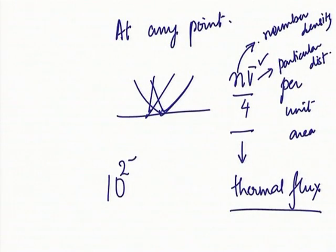Once you know the thermal flux and the average velocity, you can get the pressure: based on the average velocity you know the change in momentum, and you know how many collisions are occurring per unit time. Knowing the change in momentum per unit time gives the force, and force per unit area is the pressure. At atmospheric conditions — one atmosphere at 25 degrees Celsius for air — you realize that per square meter we are talking of close to 10^27 collisions per second.